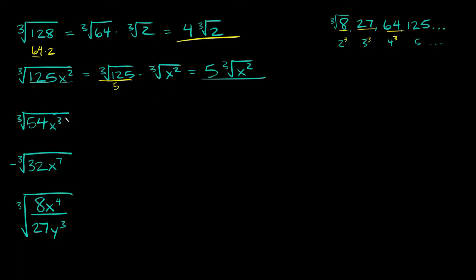Now let's do some examples where we're going to be able to break down the exponent more. Here we have the cube root of 24x cubed. We can split this up into the number and the variable. So this is going to be equal to the cube root of 54 times the cube root of x cubed. Now 54 is not a perfect cube, but we can simplify it into 27 times 2.